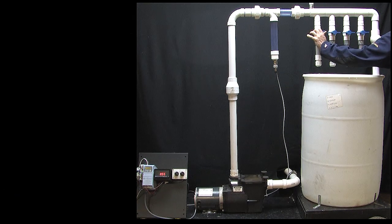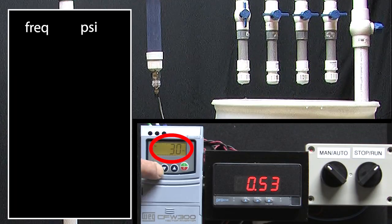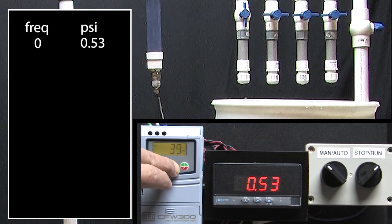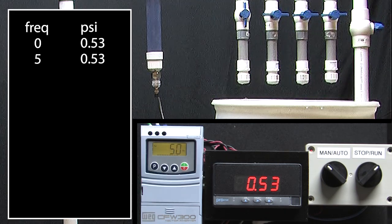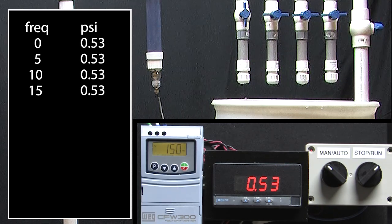With one valve open, let's switch to run mode. At 0 Hz we basically get 0 psi. No surprise there. I'll increase the drive frequency 5 Hz and we still don't have any pressure. 10 Hz? Nope. 15 Hz? Nothing.